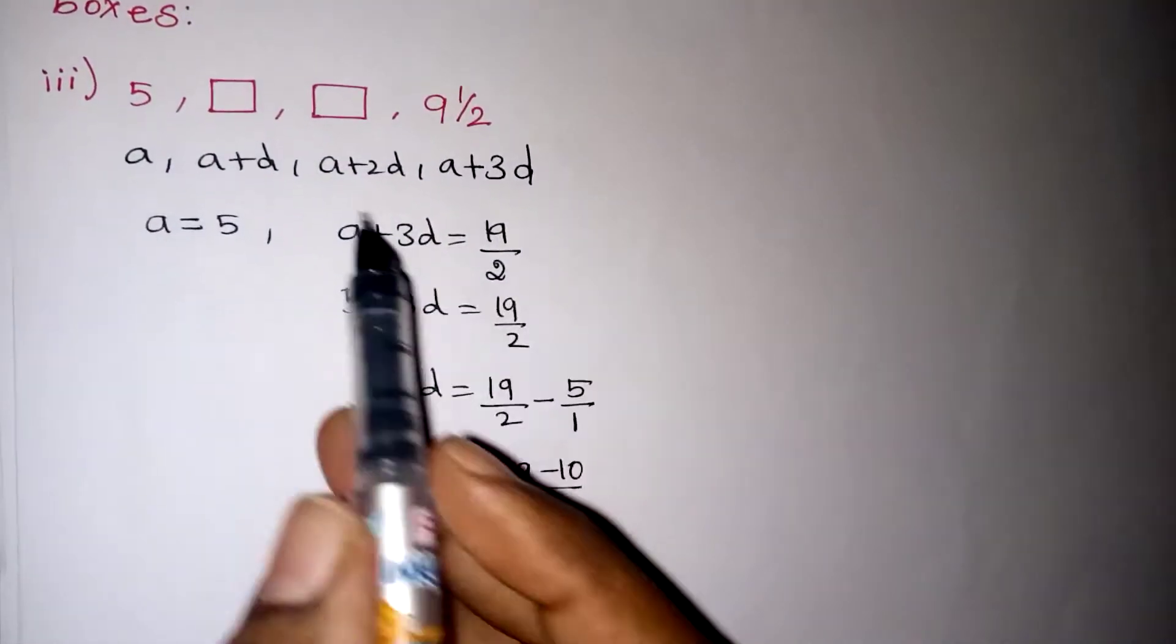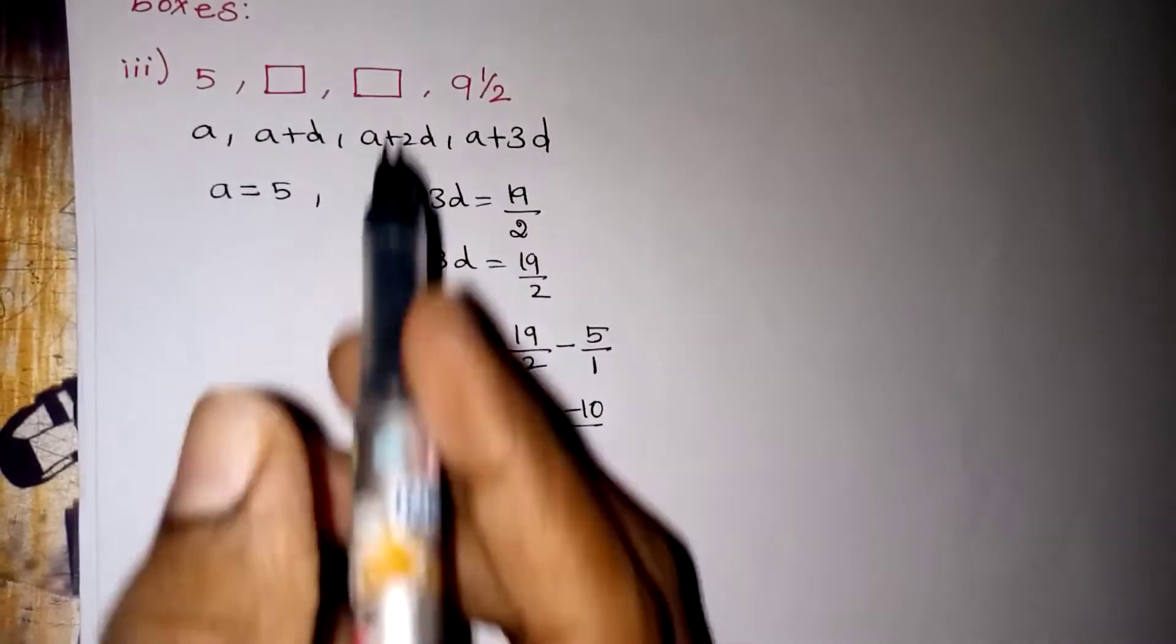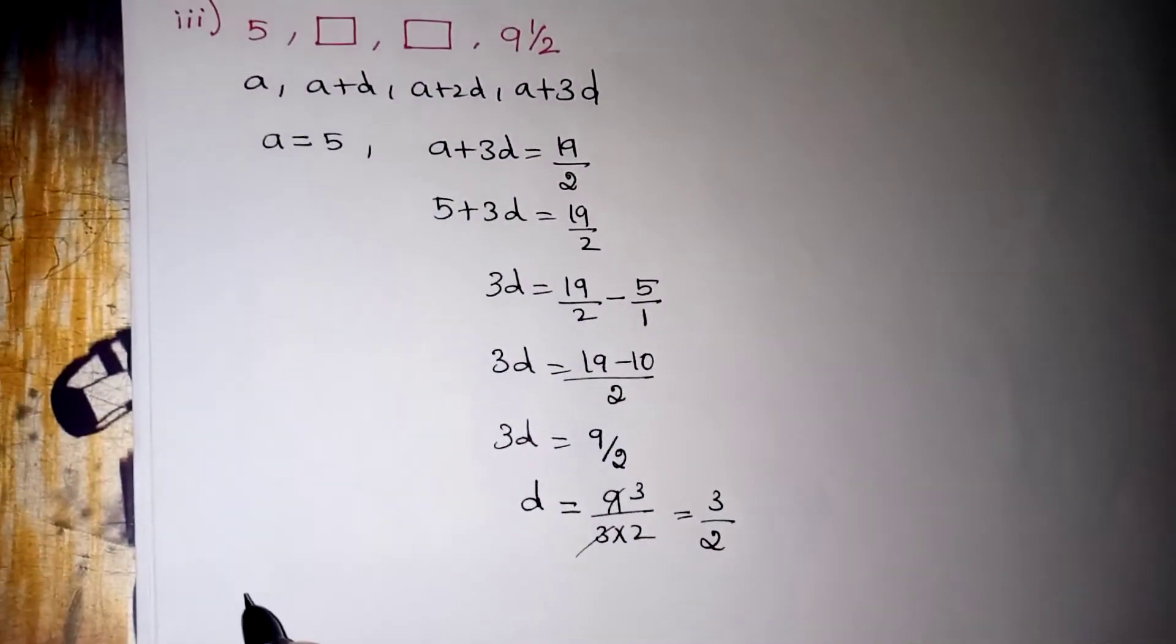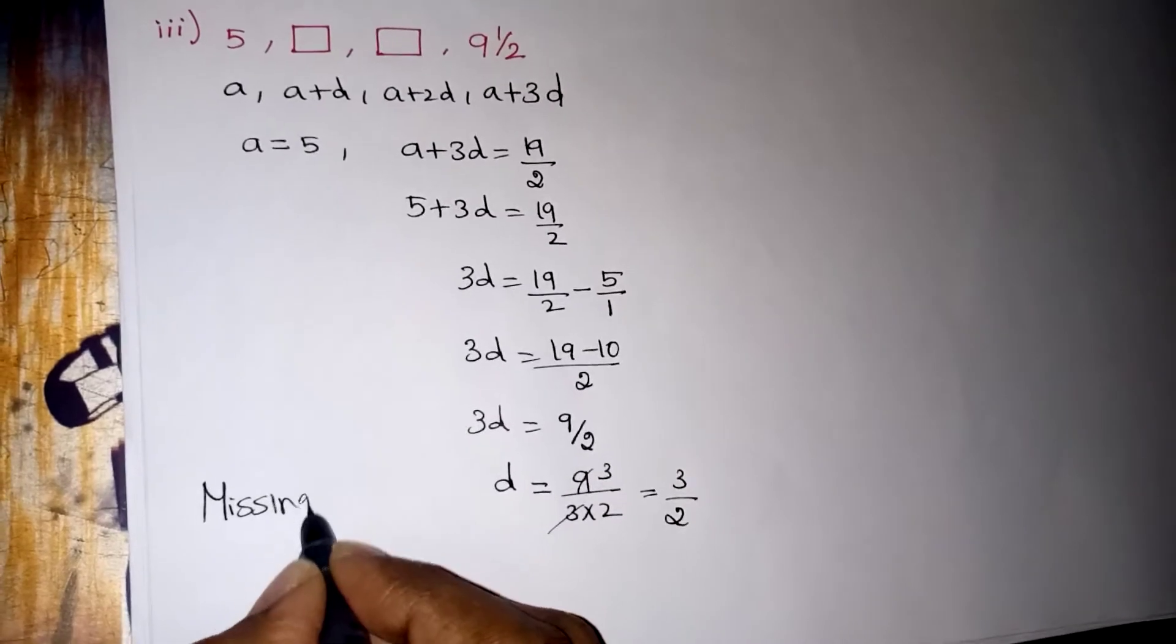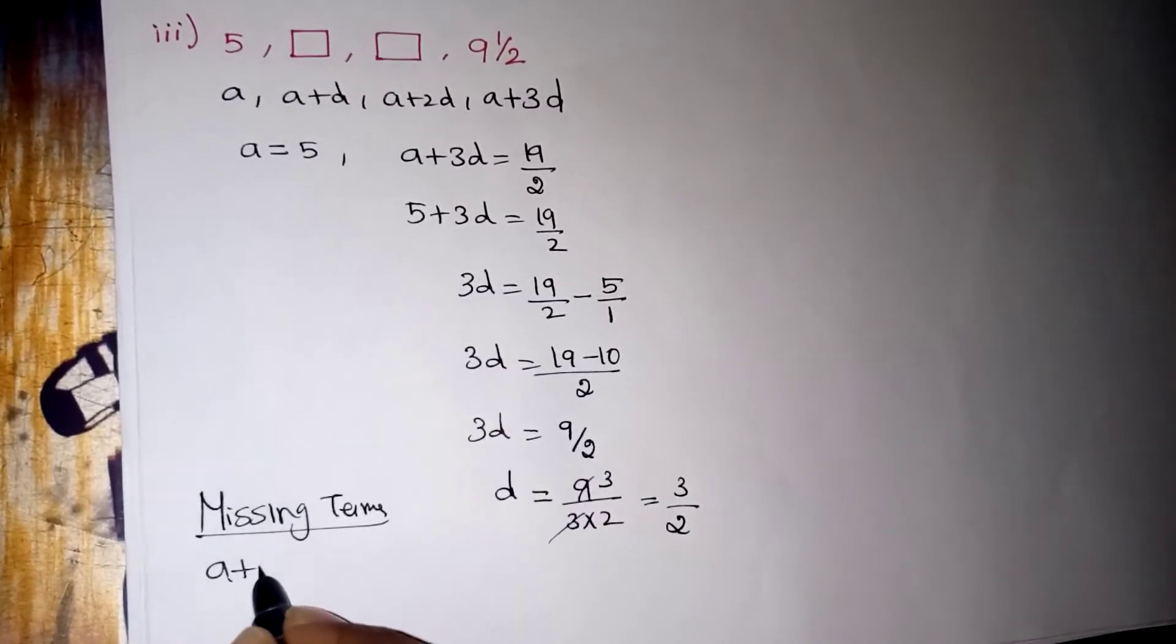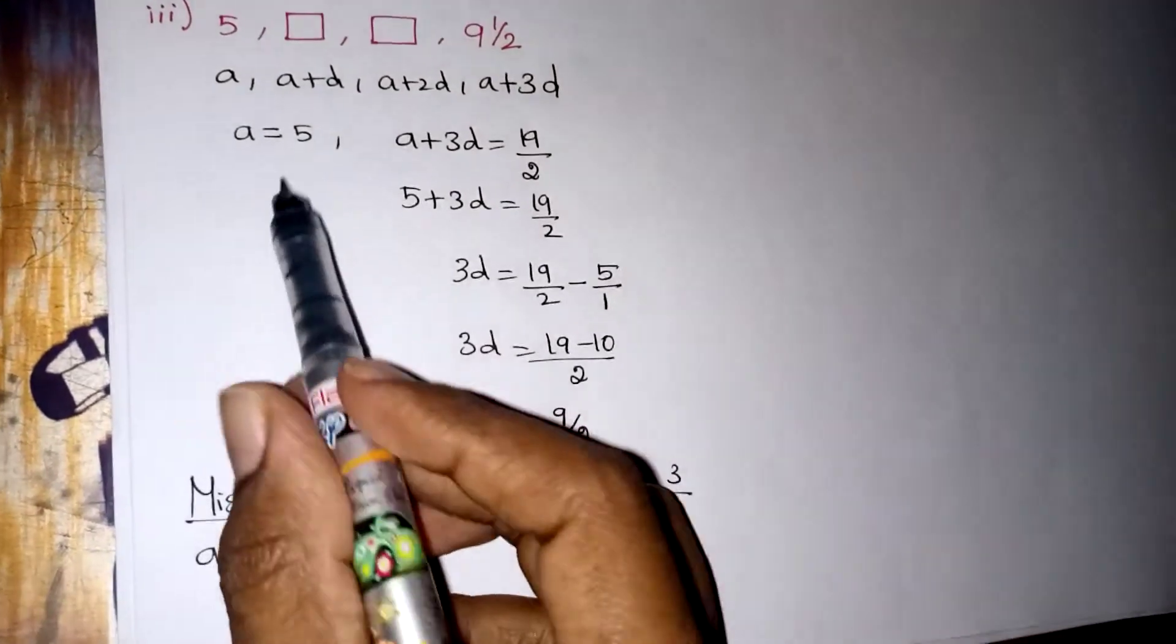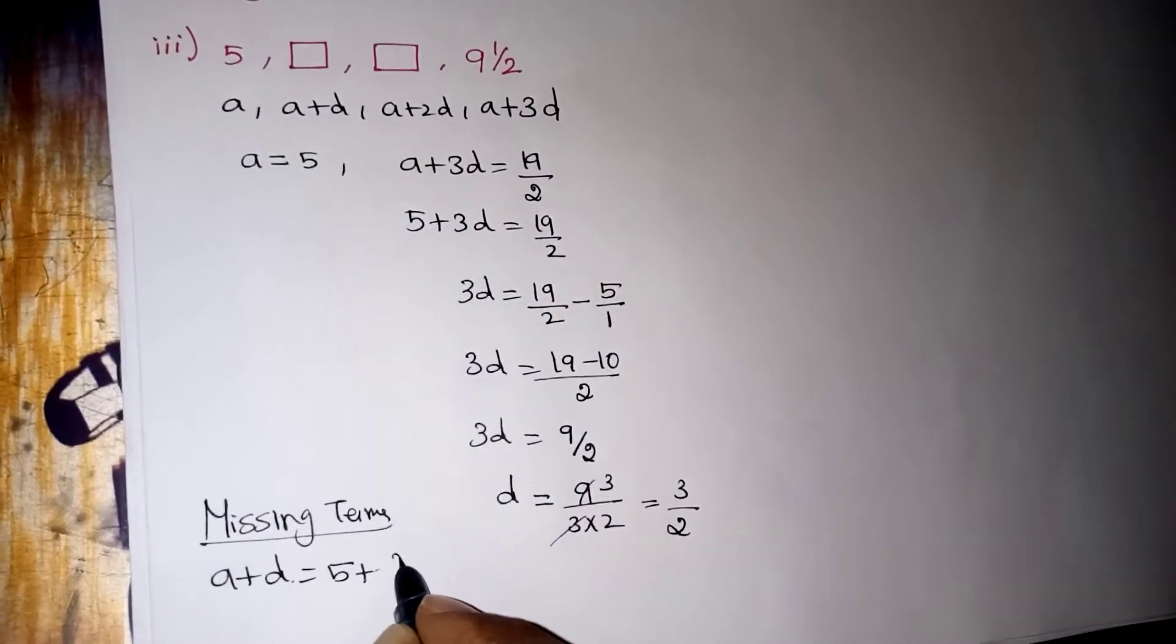Now we are going to find the missing terms. We have 2 missing terms in this problem. The first missing term is A plus D. So A plus D is equal to A value 5 plus D value 3 by 2. Take the LCM and add. 5 twos are 10, 3 ones are 3 by 2.